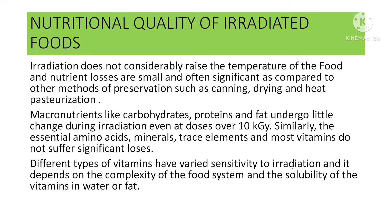The essential amino acids, minerals, trace elements, and most vitamins do not suffer significant losses. Different types of vitamins have varied sensitivity to irradiation, depending on the complexity of the food system and the solubility of the vitamins in water or fat. The vitamins recognized as being highly sensitive to irradiation are vitamin B1, vitamin C, vitamin A, and vitamin E. However, vitamin B1 is even more sensitive to heat than to irradiation. Vitamin losses can be minimized by irradiating food in frozen form or by packaging in an inert atmosphere such as under nitrogen.